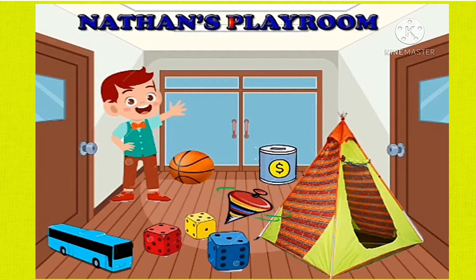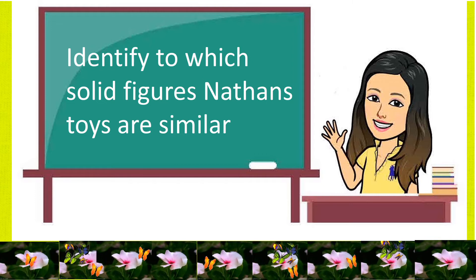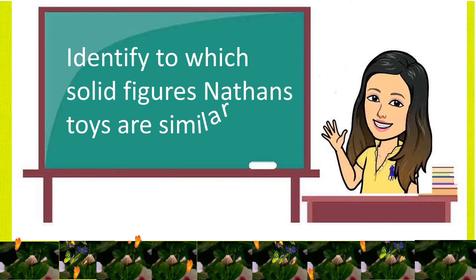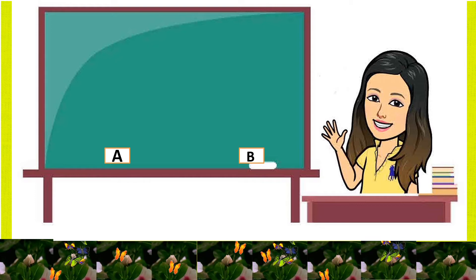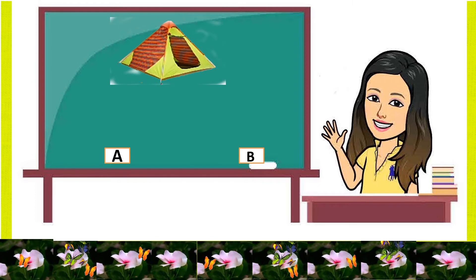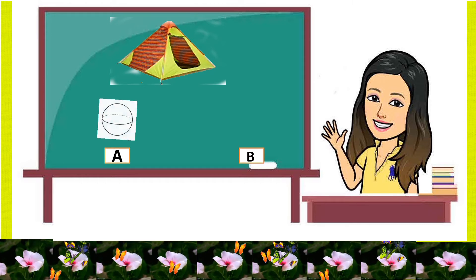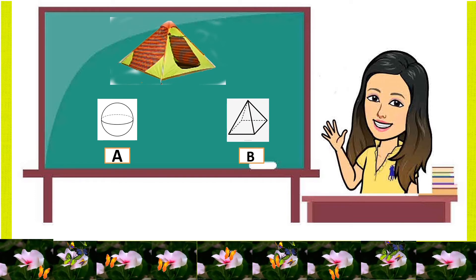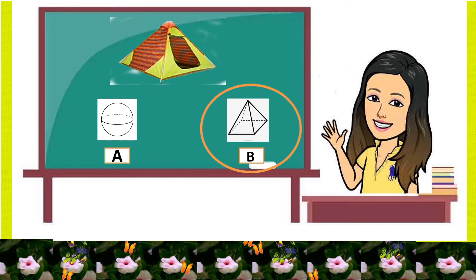This is Nathan's room, or playing room. His mother asked him to arrange and clean his toys. He has his sleeping tent, dice, school bag, coin bags, top, and ball. Let us analyze his toys. Try to identify which solid figures Nathan's toys are similar to. Number 1: sleeping tent. Is this similar to A. Sphere or B. Pyramid? You are right — the answer is letter B.